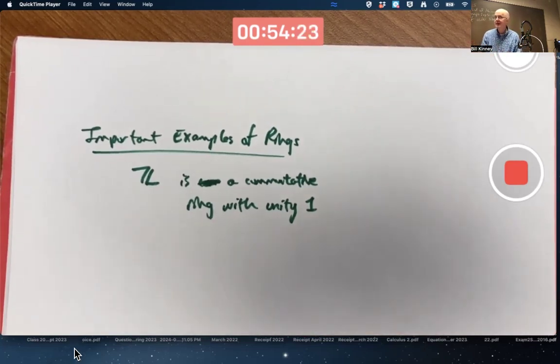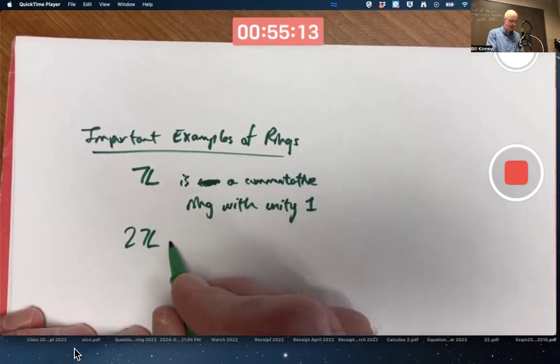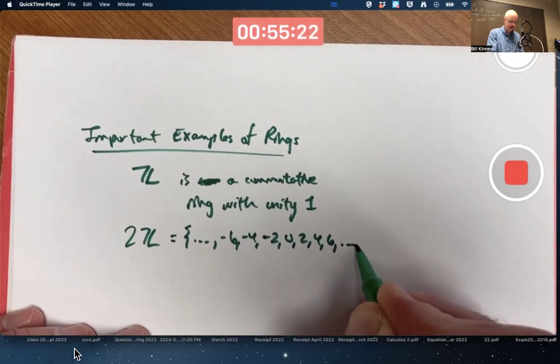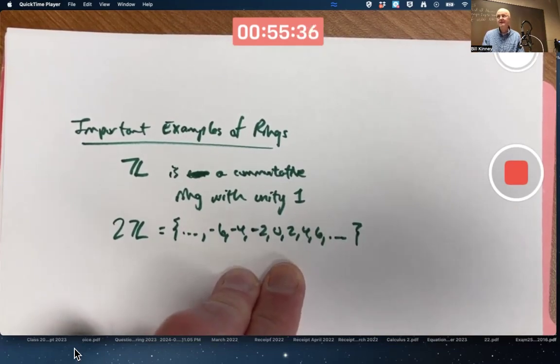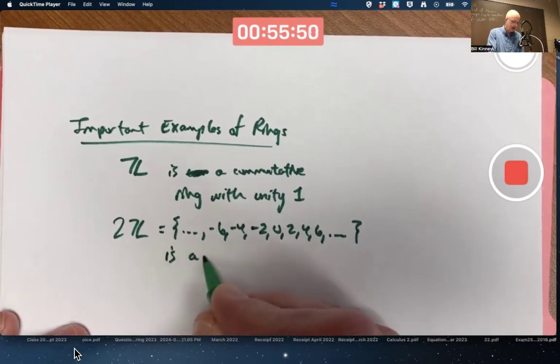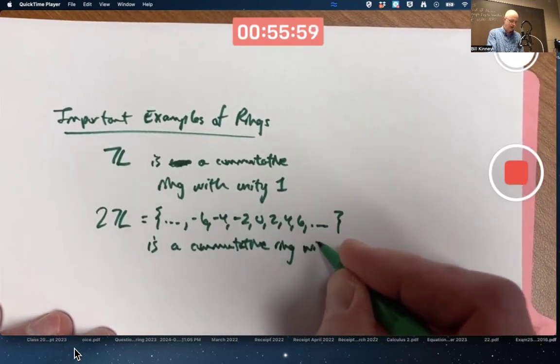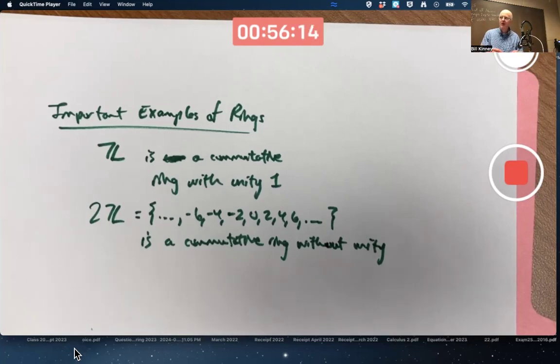2Z represents the even integers. That's the notation we use in this context for the even integers, which is, as an abelian group, a subgroup of Z. It is also a ring. Multiply any two even integers, you're going to get an even integer, right? You're not going to get an odd one. It's closed under multiplication. It's also associative with respect to multiplication. And the distributive property still works. It is a commutative ring, but it does not have a unity, without unity. There's no one in there. So that's kind of weird. You can have a commutative ring that has no one. It can get even weirder.